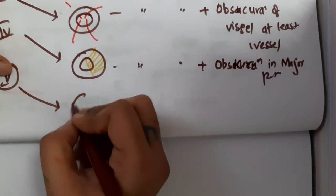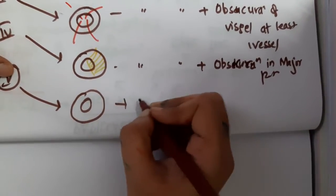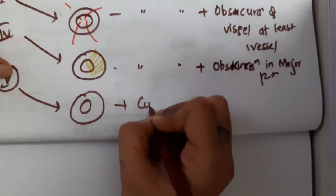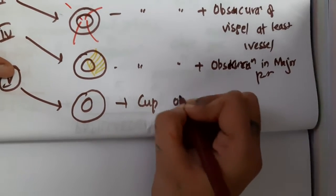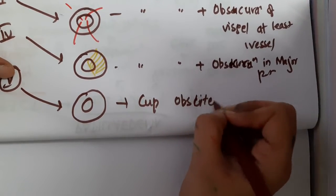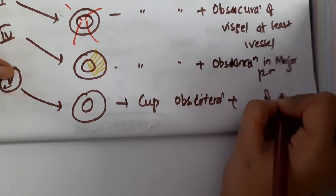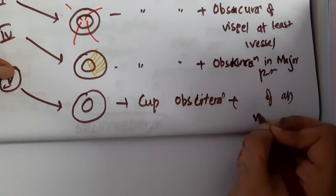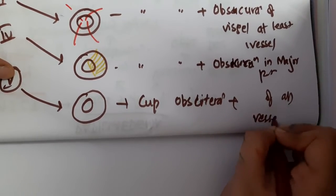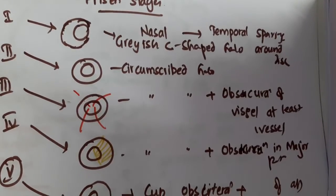In stage five, there is complete obscuration. The cup is obliterated and obscuration of all vessels is seen — all the vessels are not clearly seen. This is the current staging.